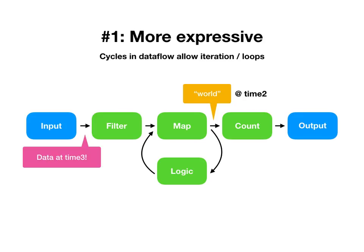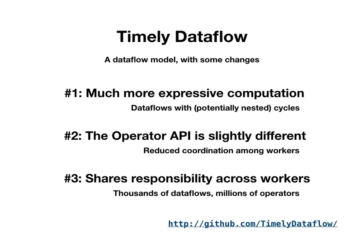The count operator can then produce 'world, comma one' and the iterative computation essentially completes — something the previous systems were getting stuck on. So this is a sequence of three things that allow iterative computation to unfold in dataflow programs: timely dataflow allows much more expressive computations with iterative support; a slight change to the operator API reduces coordination and crucially enables cycles; and a different architecture for organizing responsibility across workers makes all of this possible.